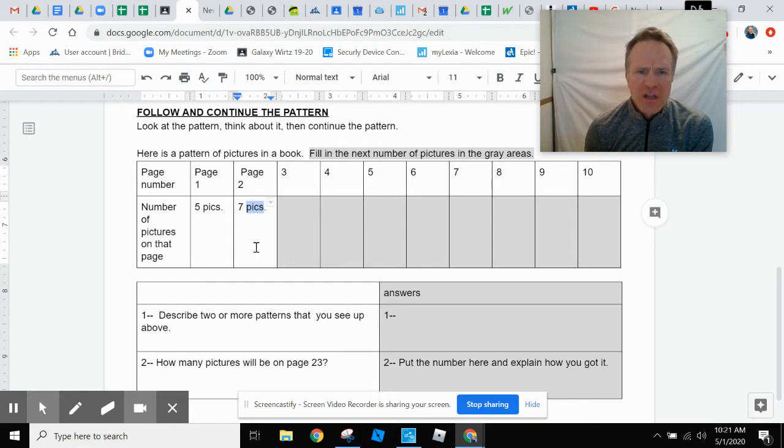So what is the pattern that we see here? We see the pages go up plus one. So every page goes up plus one. Most people saw that right away, but they didn't realize that such an easy thing is actually a pattern. So the pages go up plus one. But how about down here? How do you get from five pictures on a page to seven pictures on a page?